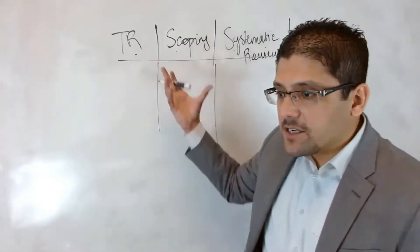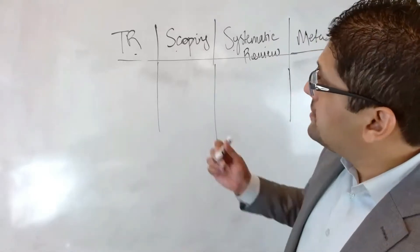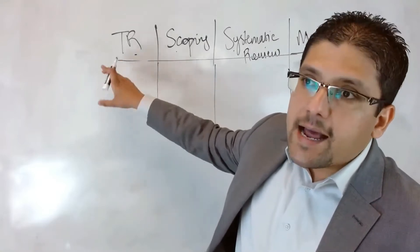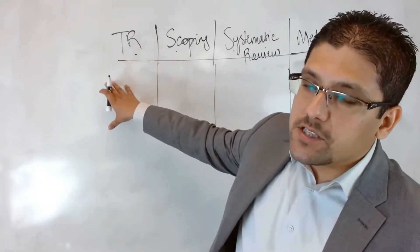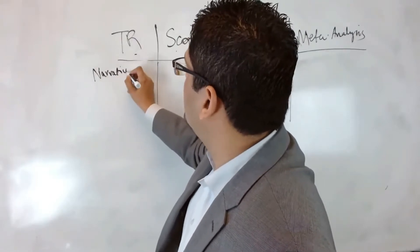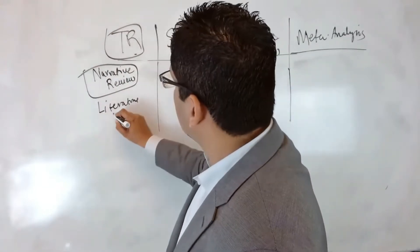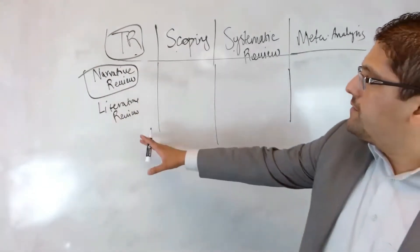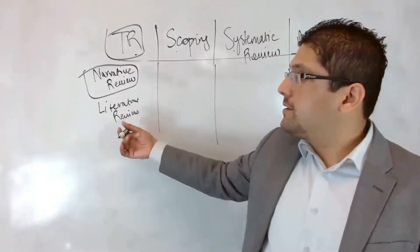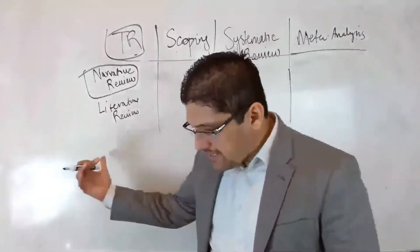These are the study designs we're talking about today. A traditional review is when you combine previously published papers together and write a paper from them. Traditional review is also known as narrative review — it has three names: traditional review, narrative review, and literature review. The term 'literature review' is normally used with traditional review.